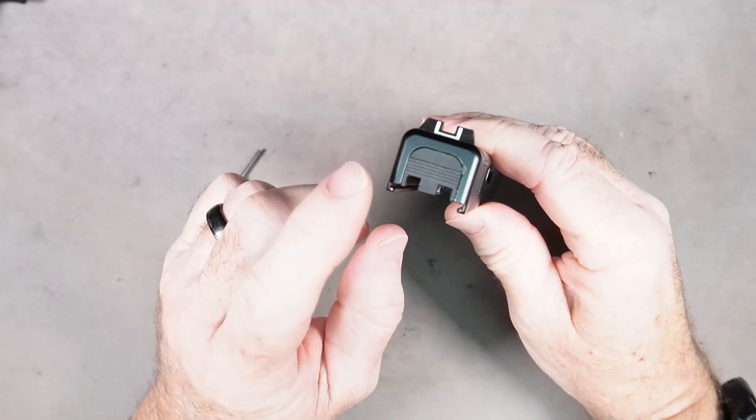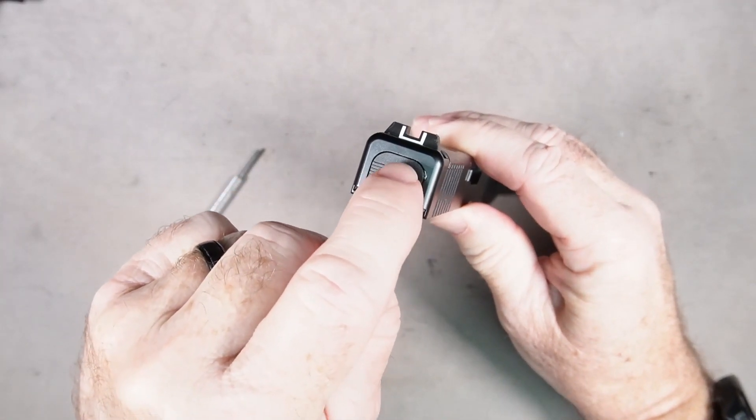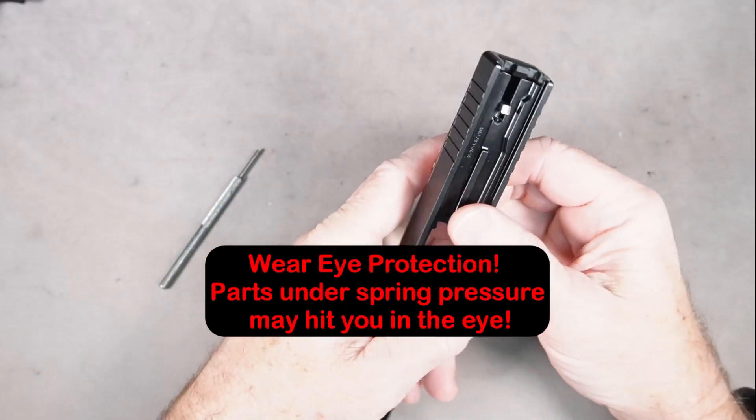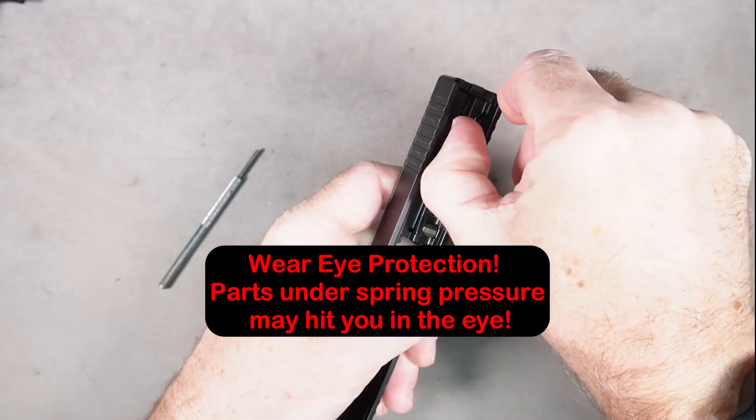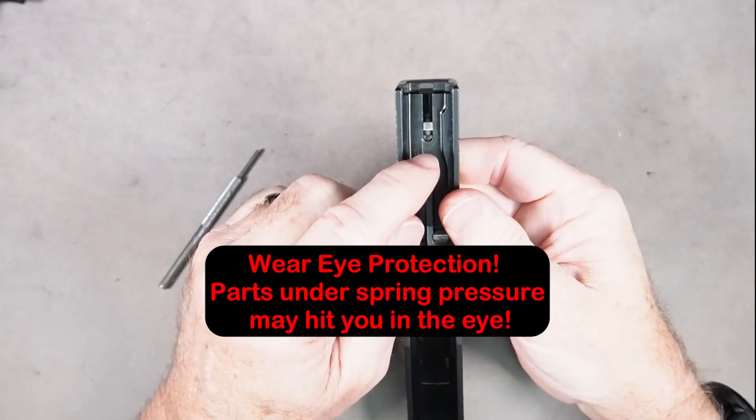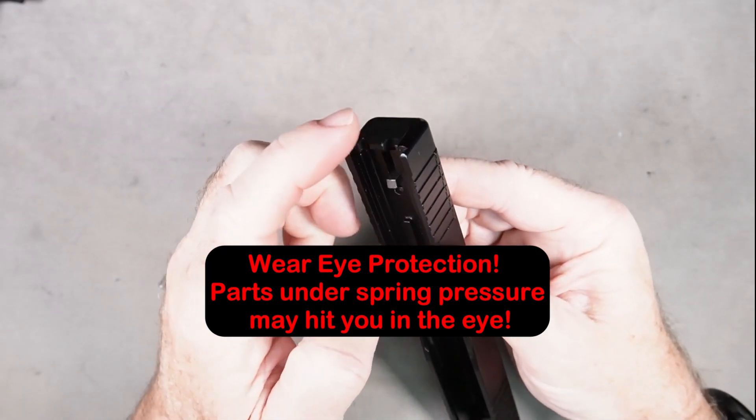The first thing we want to do is remove the slide cover plate, which is this piece in the back here. Now this cover plate is under spring tension from the firing pin spring, so we need to remove that spring tension to get this off.